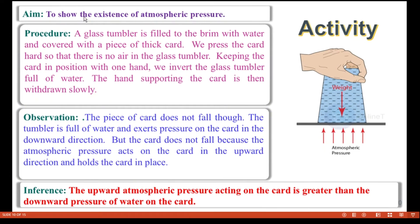Here is an activity to show the existence of atmospheric pressure. A glass tumbler is filled with water and covered with a piece of thick card. We press the card firmly so there is no air in the glass tumbler. Keeping the card in position with one hand, we invert the glass tumbler, then slowly withdraw the hand supporting the card. We observe that the card does not fall. The tumbler full of water exerts pressure on the card downward, but the atmospheric pressure acts on the card in the upward direction, keeping it in place. This shows atmospheric pressure is greater than the pressure exerted by the water inside the glass tumbler.